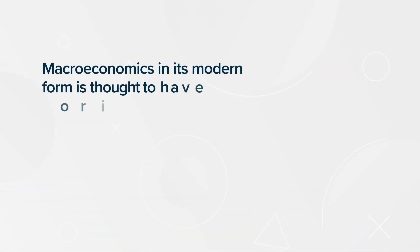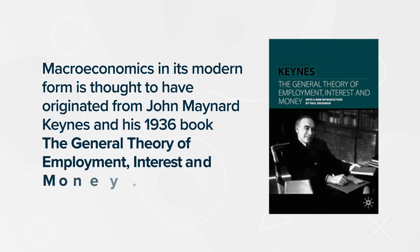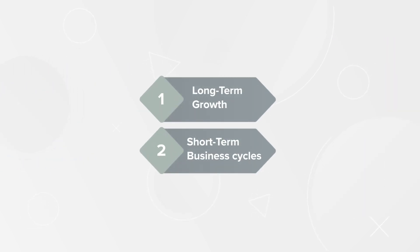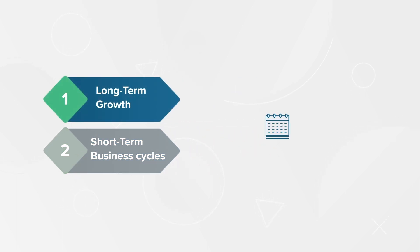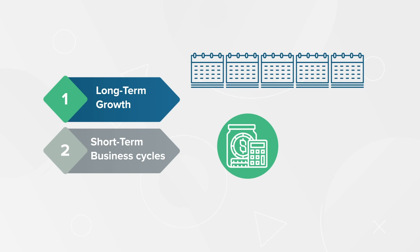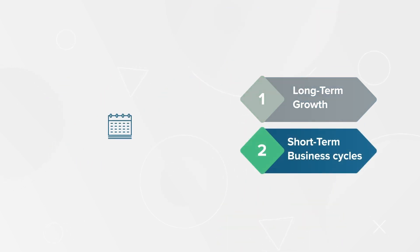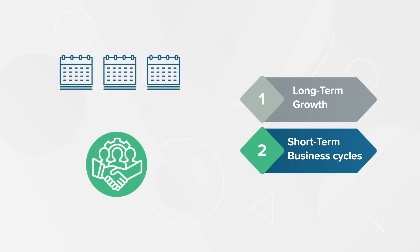Macroeconomics in its modern form is thought to have originated from John Maynard Keynes and his 1936 book The General Theory of Employment, Interest, and Money. There are two distinct areas of macroeconomic research: long-term growth and short-term business cycles. Long-term macroeconomics focuses on topics over many years like national income and overall changes in unemployment, while short-term macroeconomics looks at factors affecting the economy on a smaller time frame, known as business cycles.